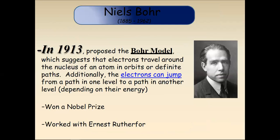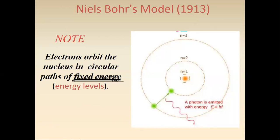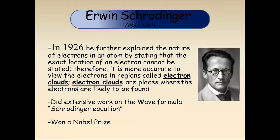To solve the problems within Rutherford's model, Niels Bohr in 1913 introduced the Bohr model, which suggests that electrons travel around the nucleus in orbits of definite energy. Additionally, electrons can jump from one energy level to another depending on their energy. He worked with Ernest Rutherford and won the Nobel Prize. When a photon is emitted by the electron, the electron moves from one shell to another.